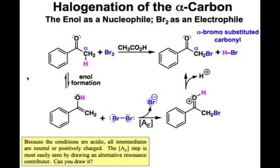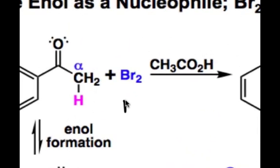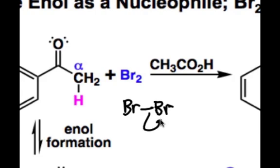You'll recall from the lesson on alkene additions that the halogens, X2, can serve as electrophiles. Each halogen can be considered as a leaving group in and of itself, and in the leaving of that leaving group, we can imagine a partial positive charge developing on the other halogen atom.